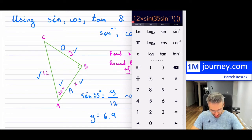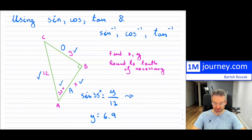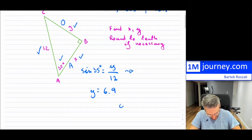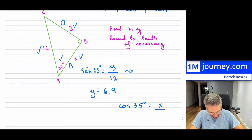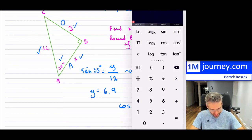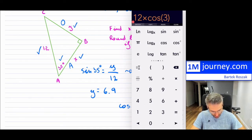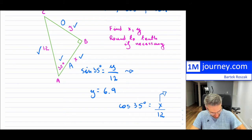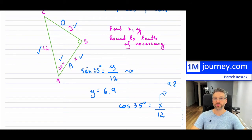Now, what if I wanted to solve for X? X is the adjacent side and I have the hypotenuse, so I can use cosine. So cos 35 equals X divided by 12. That gives us 12 multiplied by cos of 35, which equals 9.8 rounded to the tenth. So X is 9.8. Once you have two of the sides, you can always find the third using the Pythagorean theorem, or you can use cosines and sines.